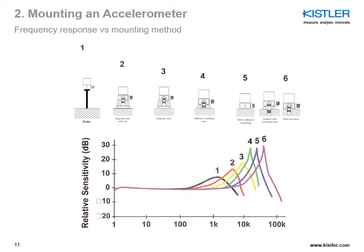Then you have direct adhesive mounting using glue or a very thin layer of wax — this gives resonance peak number five, still good performance but not as good as stud mount. Next is number four: adhesive mounting base usage, where a stud and separate plate are used together, adding mechanical filtering so the frequency response resonance peak arrives much sooner. Then number three is magnetic mounting — mostly due to the weight of the system, you are very limited in frequency response (yellow curve). Number two uses a magnetic base with a foil in between for isolation, adding another mechanical layer and further reducing frequency response (red curve).